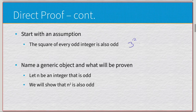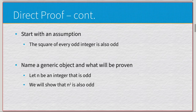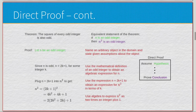Start with your assumption: the square of every odd integer is also odd. For example, 3 squared equals 9 — that's odd; 5 squared equals 25 — also odd; 13 squared equals 169 — also odd. That seems consistent. Now name a generic object: let n be an odd integer, and we want to show that n squared is also odd.